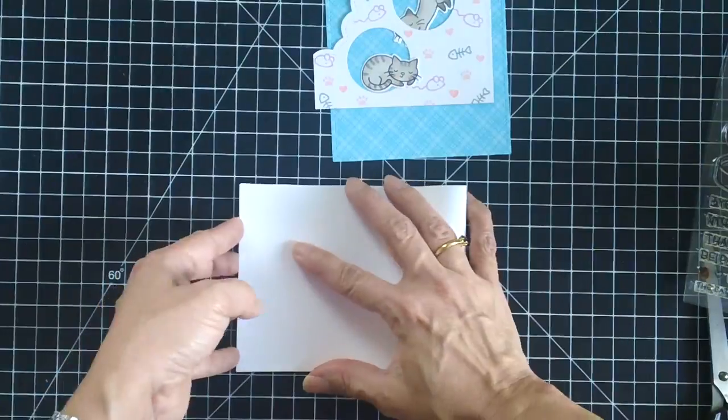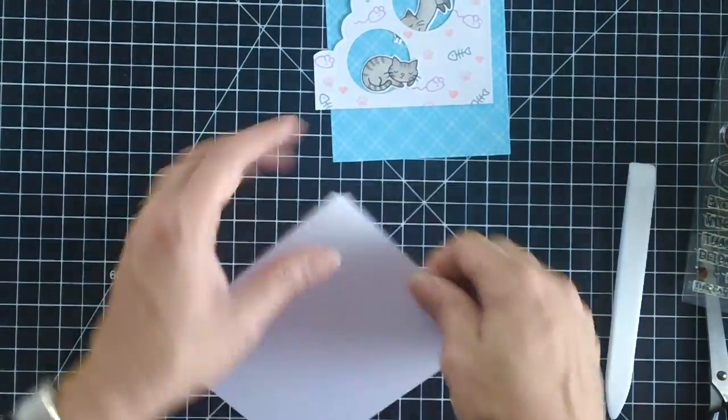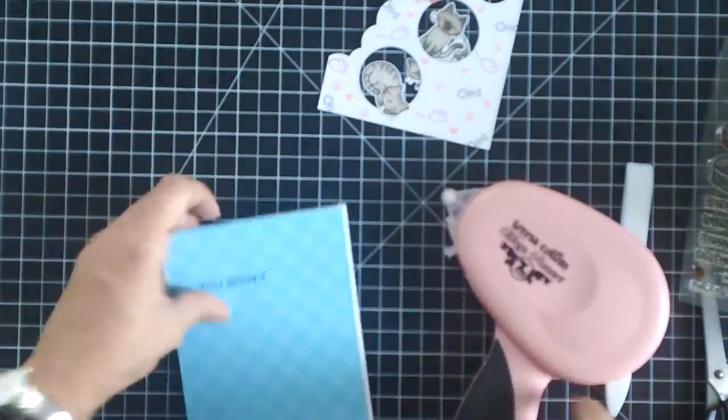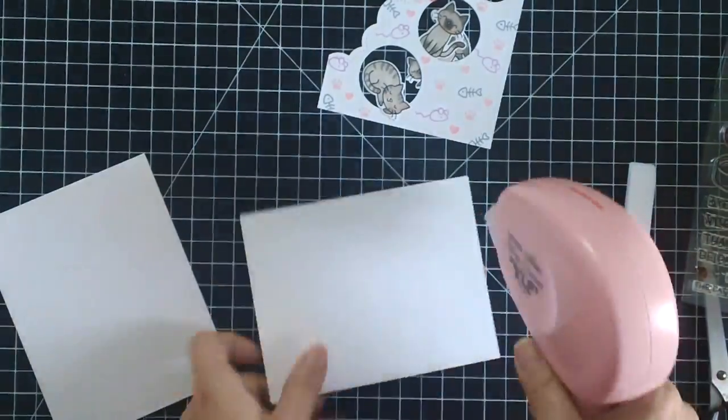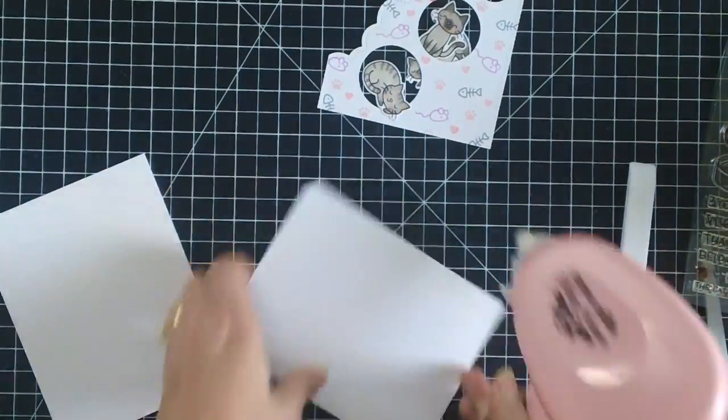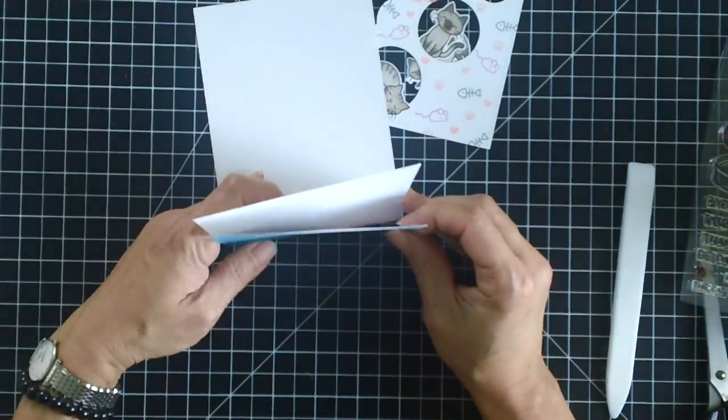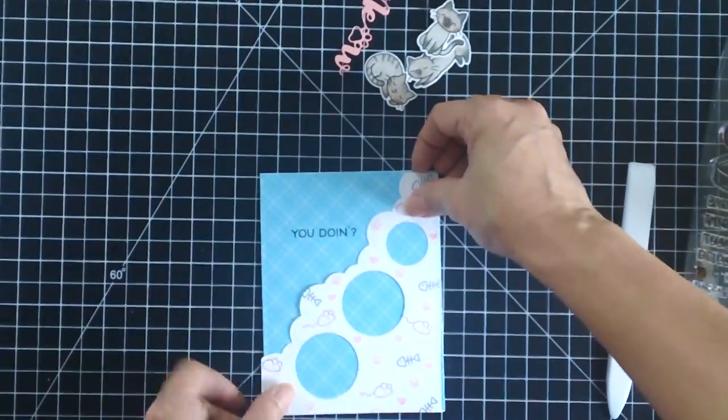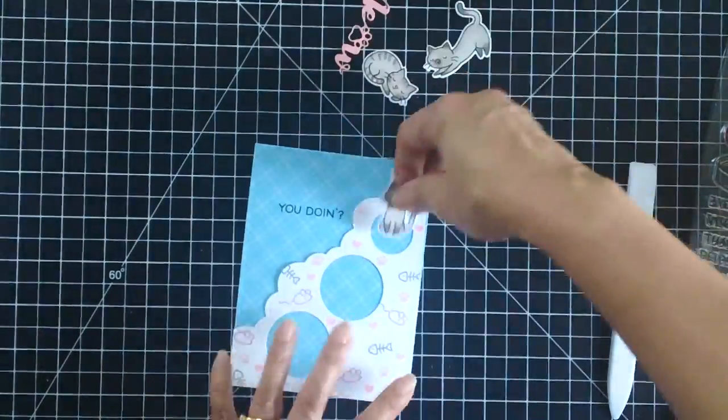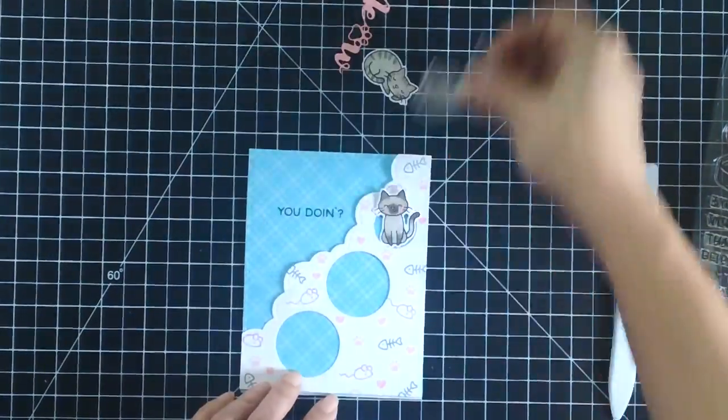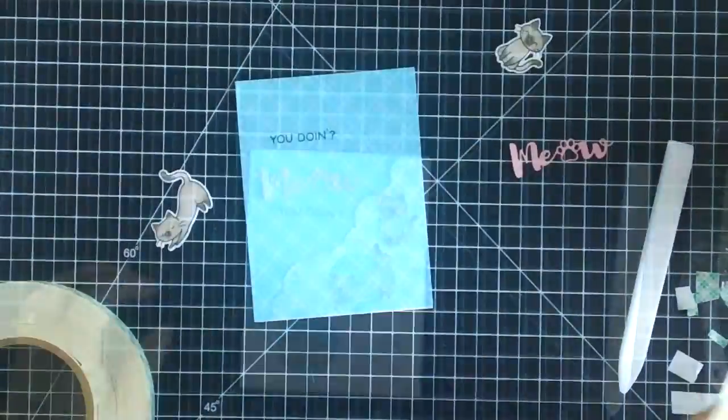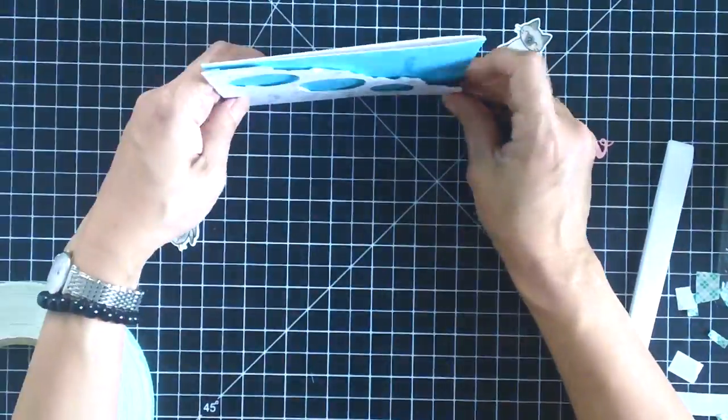And I have a top folding card base here. This is also Neenah solar white cardstock measuring four and a quarter by five and a half. I'm just using my Ceyron tape runner here to adhere my card front to the card base, and then I'm going to adhere the decorated panel here with some foam tape and then put together the rest of the card.